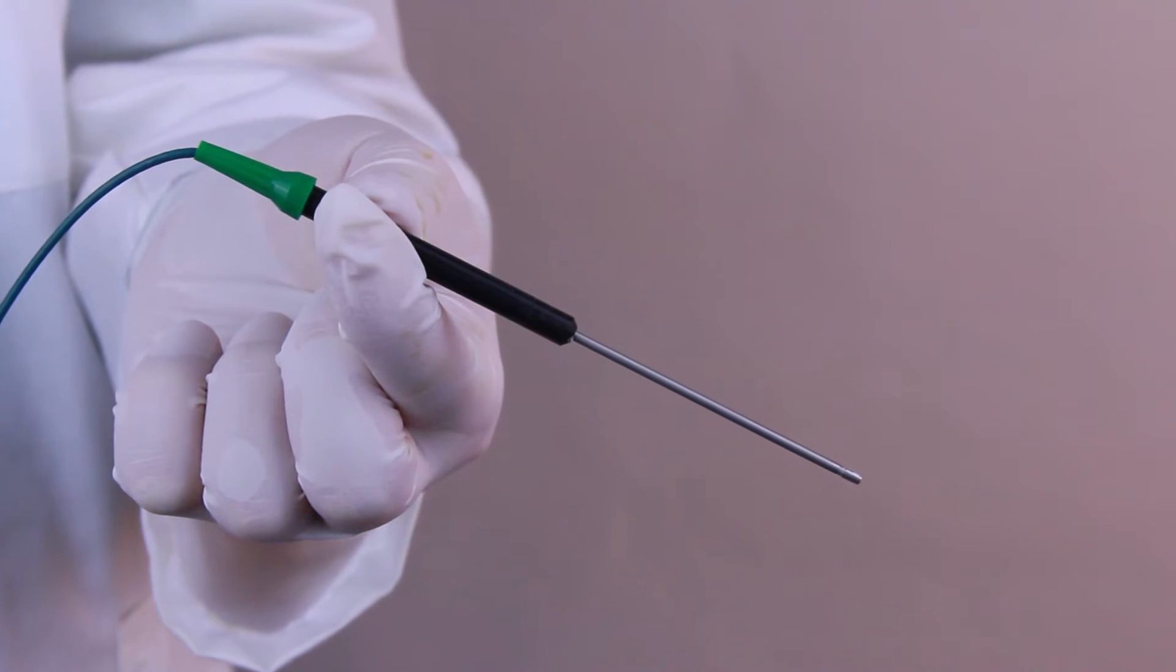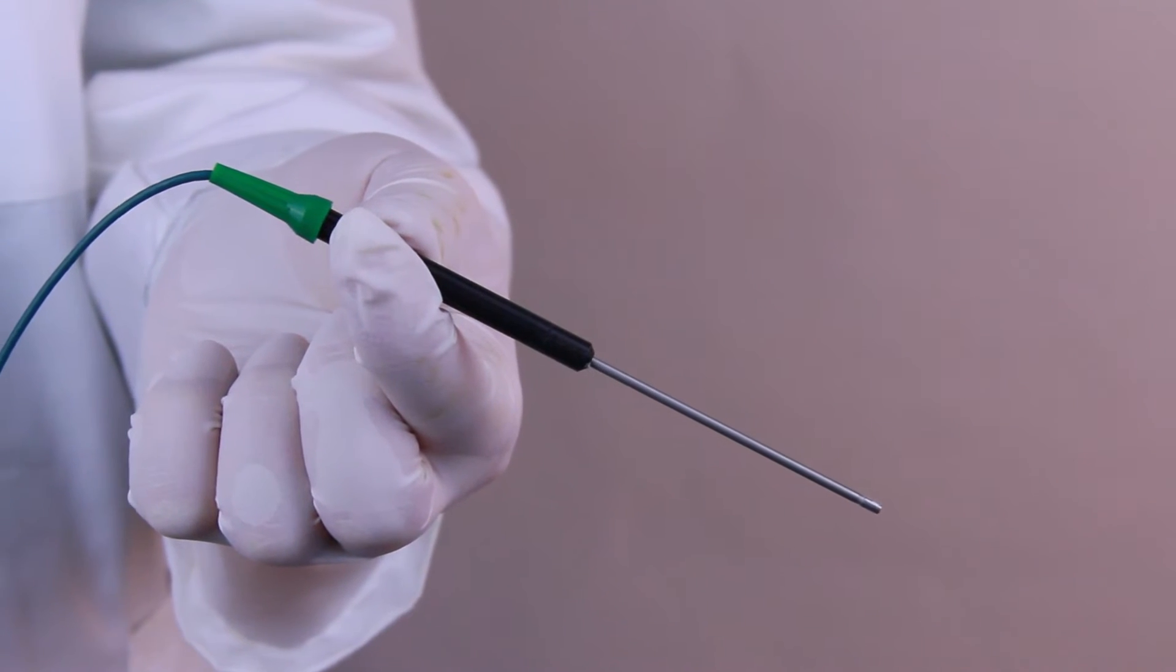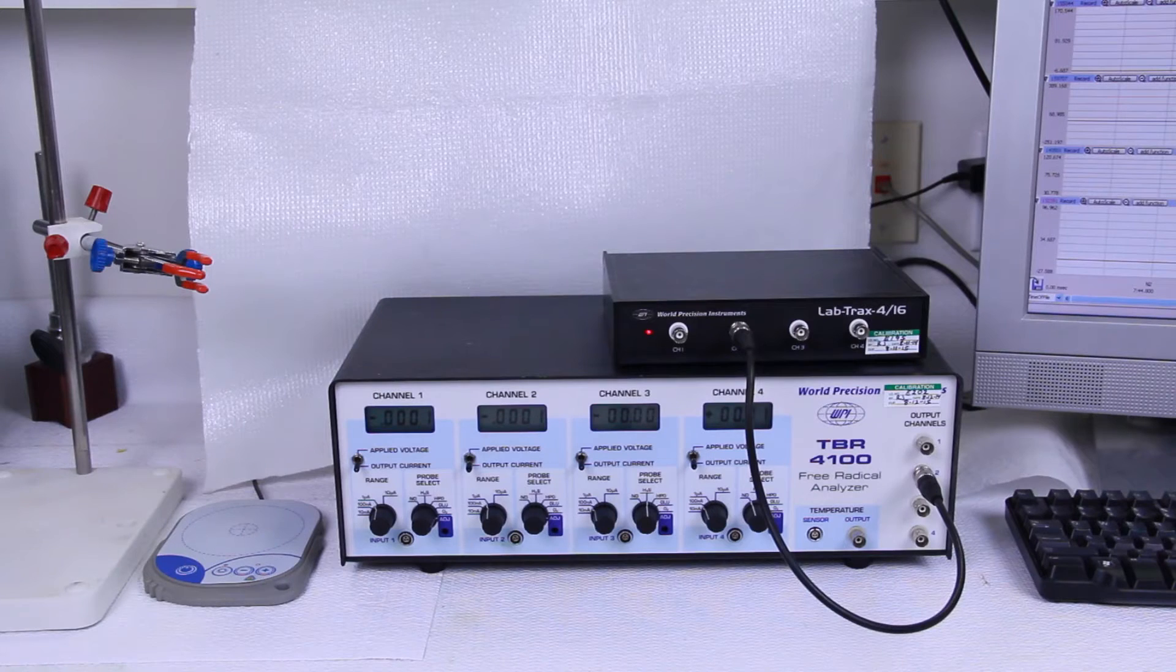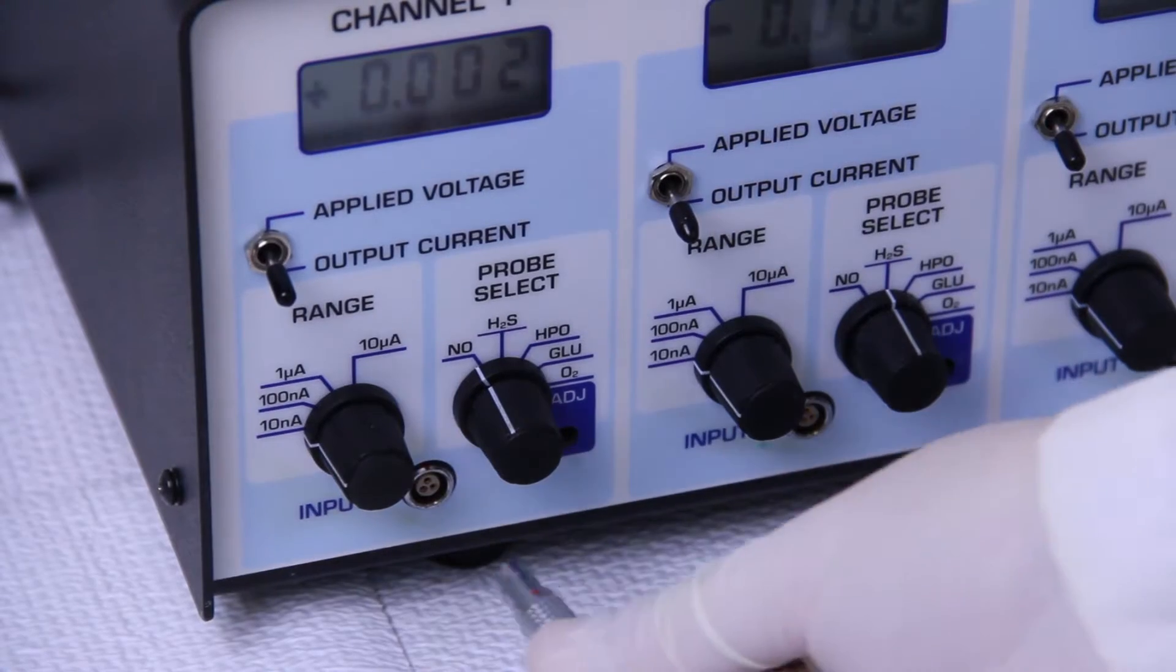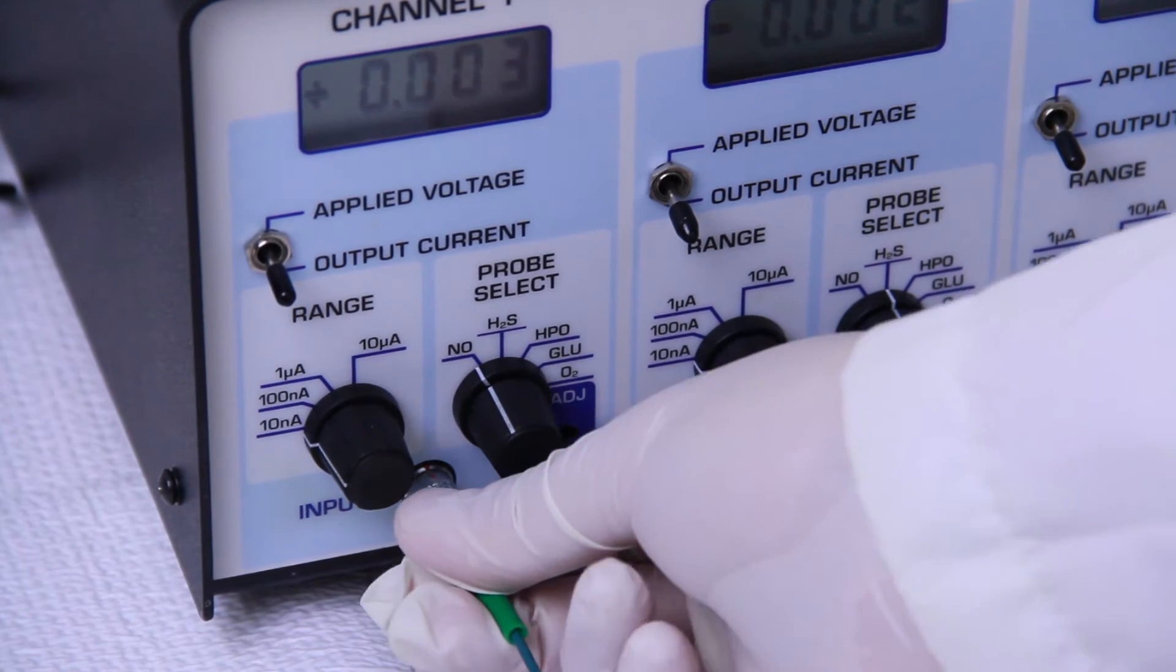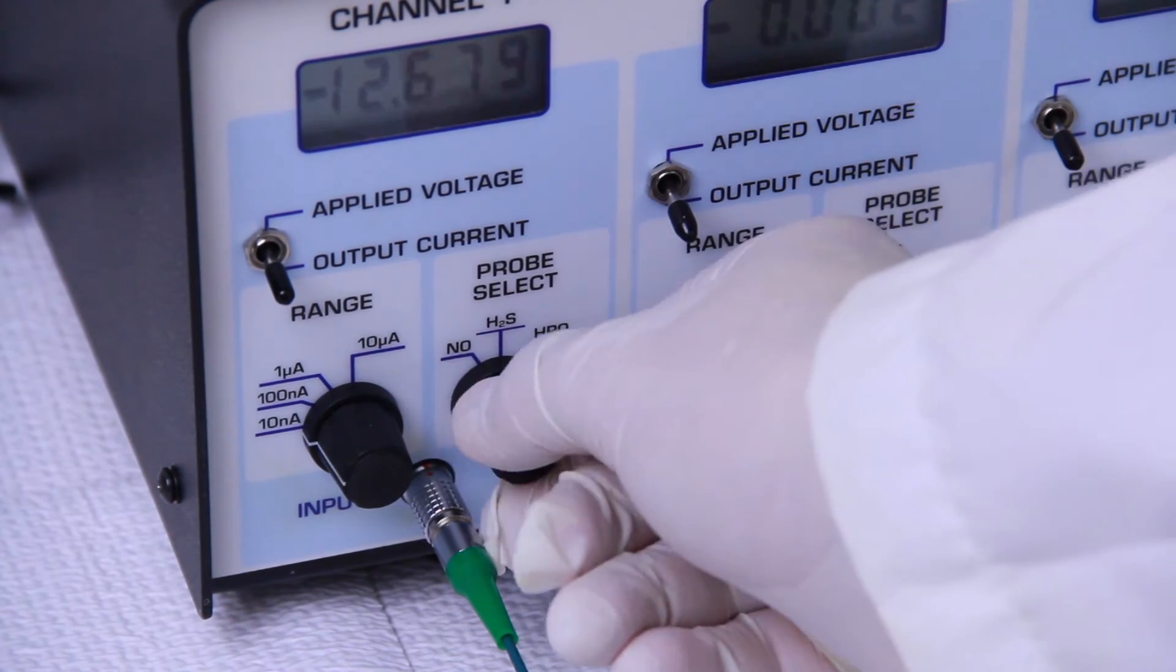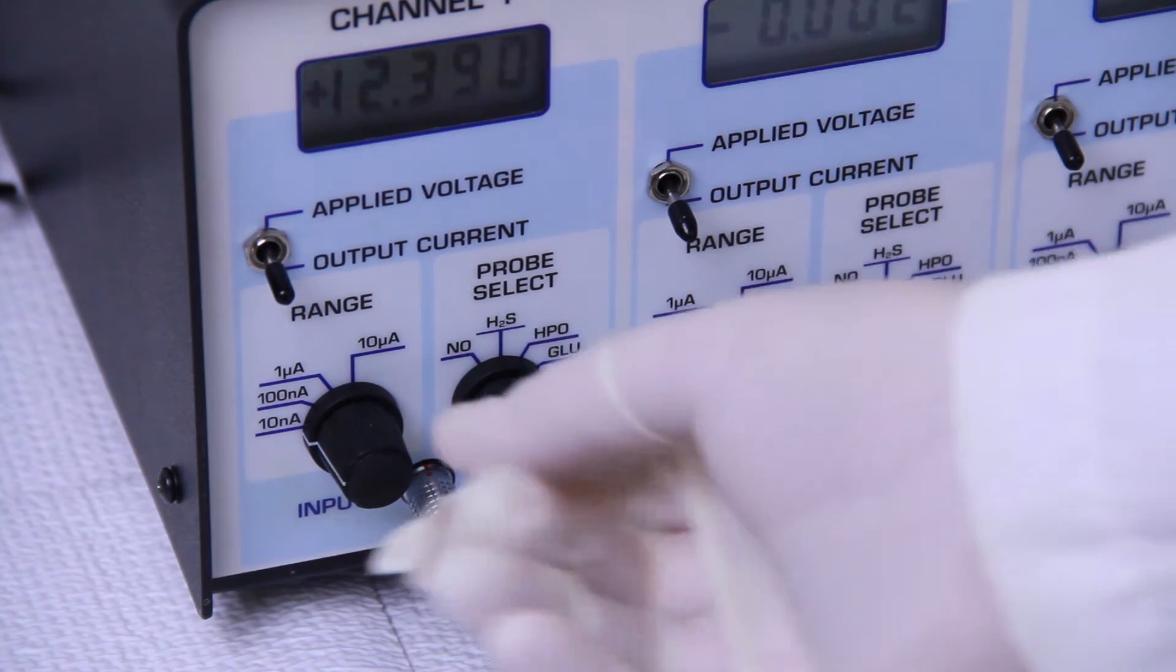Before the sensor can be calibrated, it must be allowed to polarize for at least an hour. Connect the iso-oxy-2 sensor to the TBR4100, set the probe select to oxygen, and set the range to 100 nanoamps.